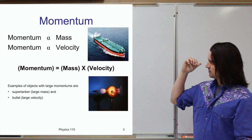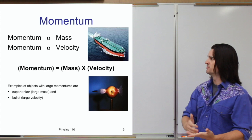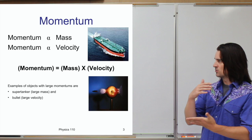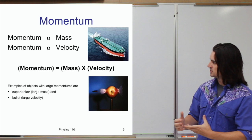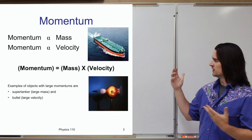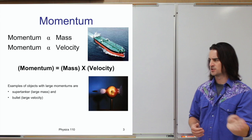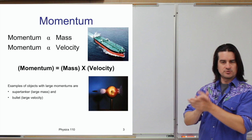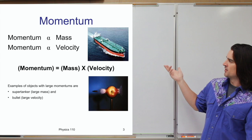Momentum incorporates both mass and velocity — two things we've talked about already. If anything has a large amount of momentum, you've got to be aware of it. The momentum of an object is proportional to its mass and also proportional to its velocity. Momentum is explicitly equal to the mass of an object multiplied by its velocity. It's a vector quantity, meaning it has a magnitude and a direction — the direction of momentum is the same direction the object is moving.